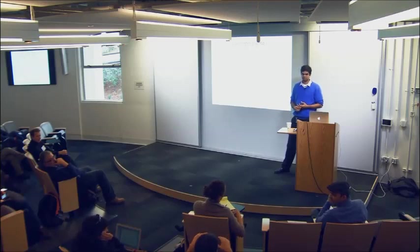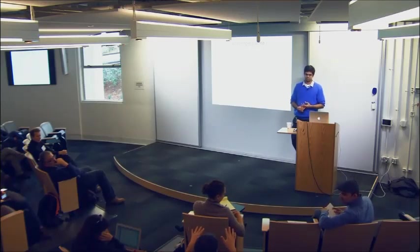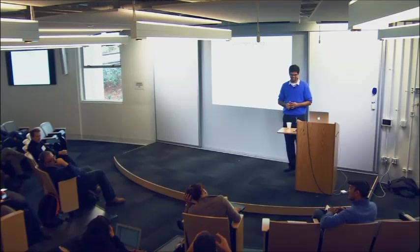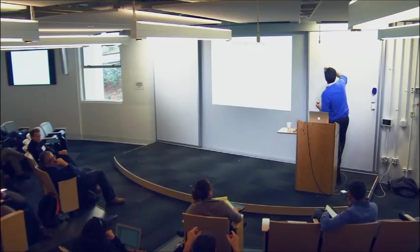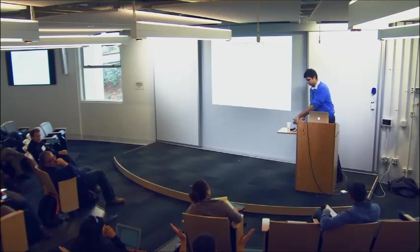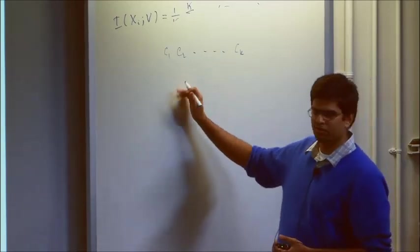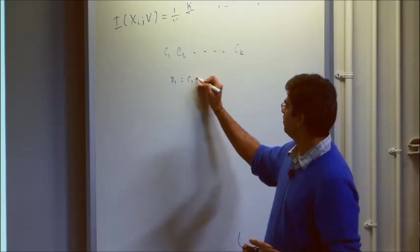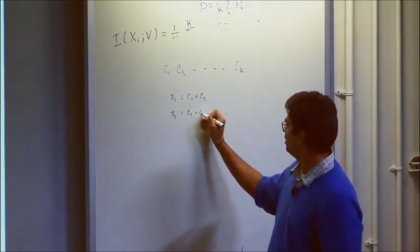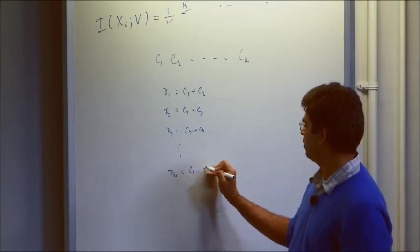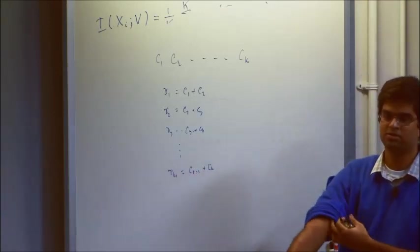A more dramatic example: suppose you learn exactly the differences in population between all 50 states. You have a histogram C_1, C_2, ..., C_K, and exact constraints of the form R_1 = C_1 + C_2, R_2 = C_2 + C_3, R_3 = C_3 + C_4, and so on through R_{K-1} = C_{K-1} + C_K. If you release all of these with just the Laplace mechanism with sensitivity 1, you can telescopically create K-1 independent estimators.